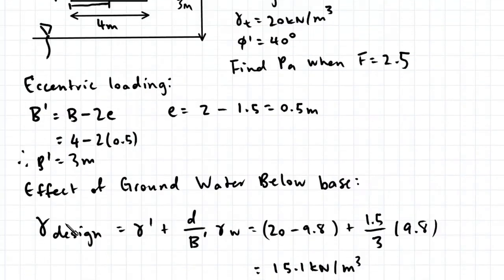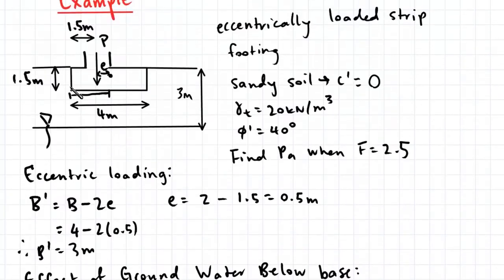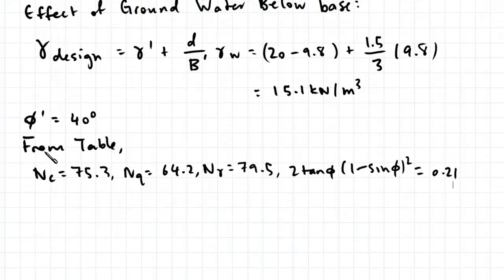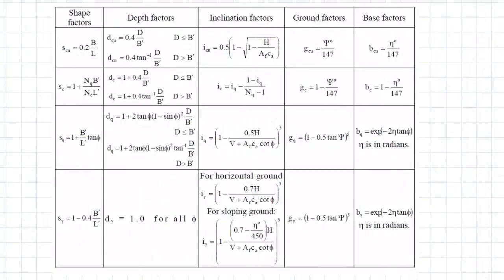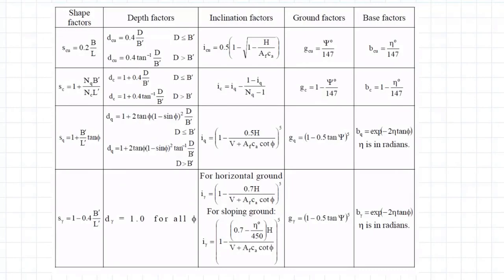We also need to determine our depth factor because the base of our shallow footing is at a certain depth below the surface of the soil. So we can go to this table to get our expressions for the depth factor. So we have dc here, dq, and dgamma.